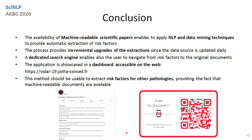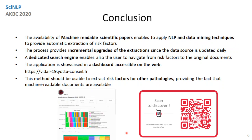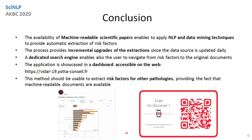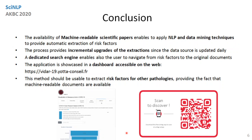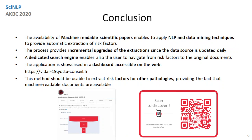To conclude, machine-readable medical papers enable applying NLP and data mining techniques to automatically extract risk factors. The process provides incremental upgrades of the extractions. The dedicated search engine also enables the user to navigate from risk factors to the original document. The application is showcased in a dashboard accessible on the web. This method should be usable to extract risk factors for other pathologies. Thank you for your attention.